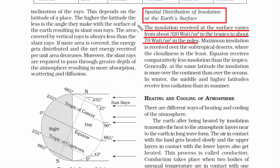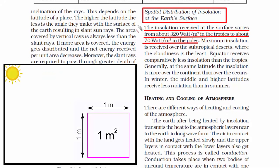320 watts per meter square means the heat produced by 320 watts of light falling on a square-shaped ground with each side of length 1 meter — a little bigger than a big-size carom board. That much surface area would be 1 meter square, and 320 watts would be equivalent to 8 forty-watt bulbs. So if you switch on 8 forty-watt bulbs and direct their light on a big-size carom board, the heat produced would be almost equivalent to the heat received at earth's surface in the tropical region.